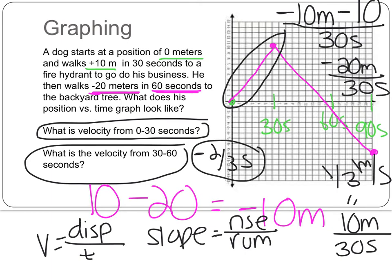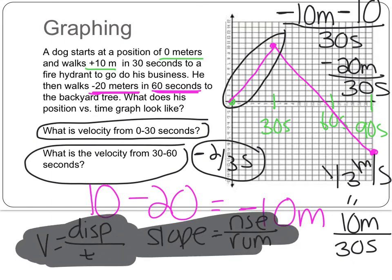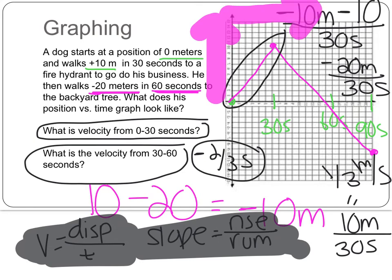So our big picture idea here is that our velocity is our displacement over time, which is also equal to our rise over our run. How can we think about that in a different way? This right here is our position. This is our time. That's my rise over my run, also my position over my time.